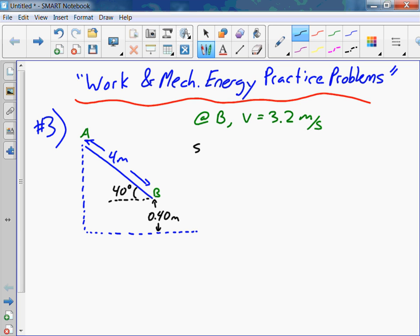So step one. The total energy at A is just gravitational potential E_g. We've got to do a little side calculation here. We've got to figure out what the height is.